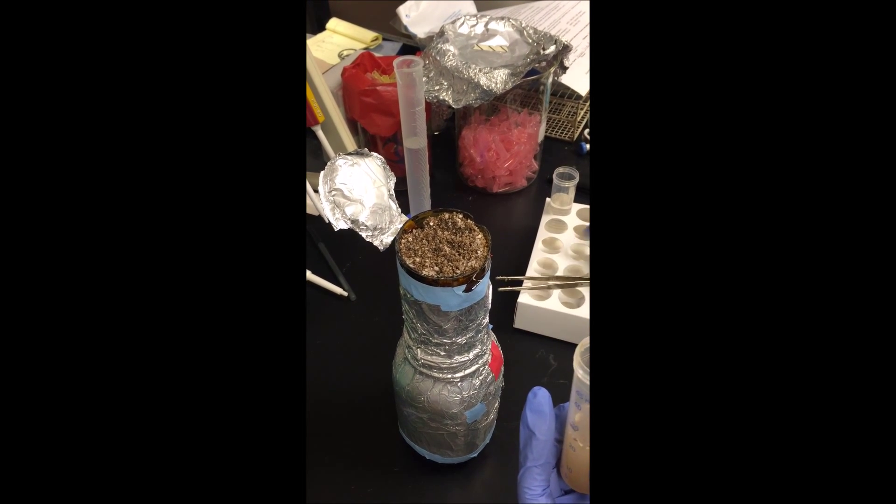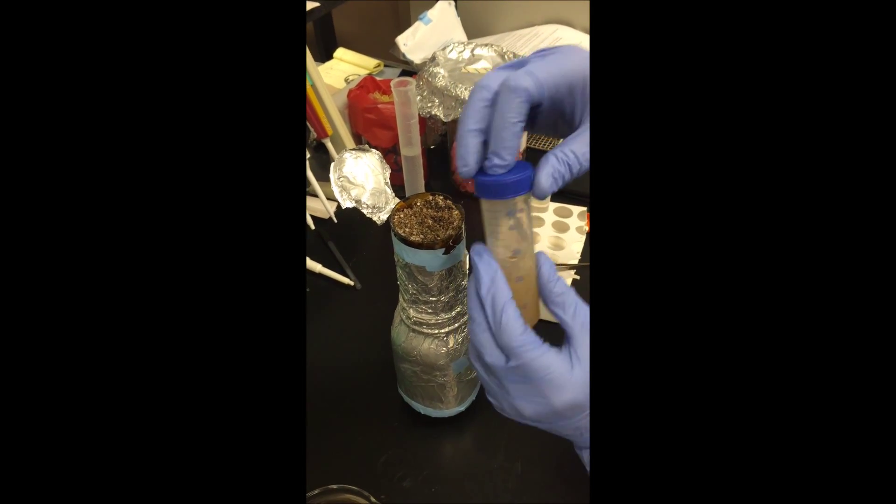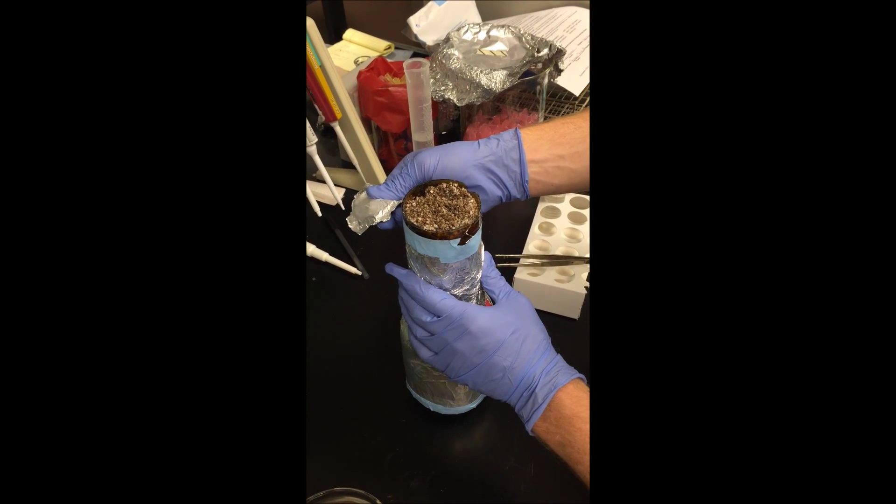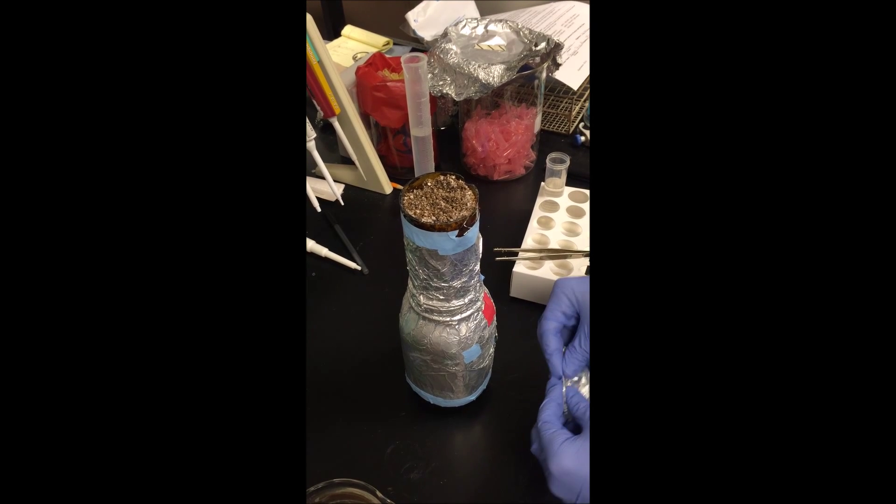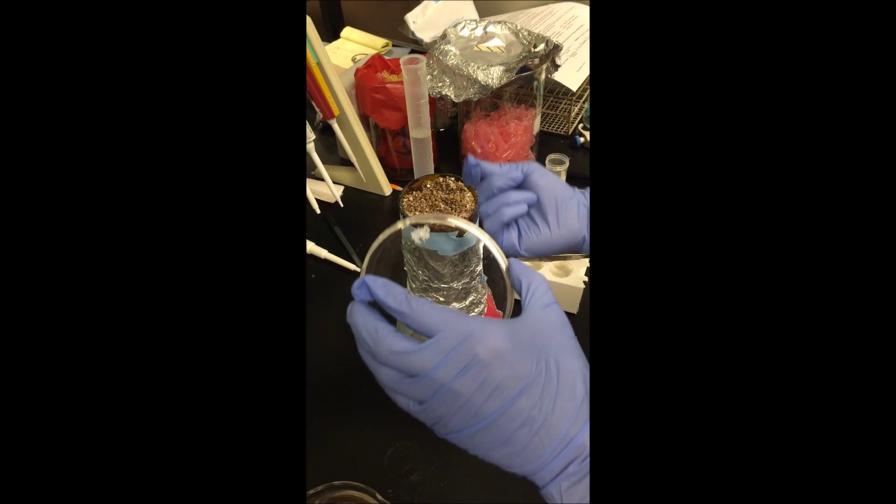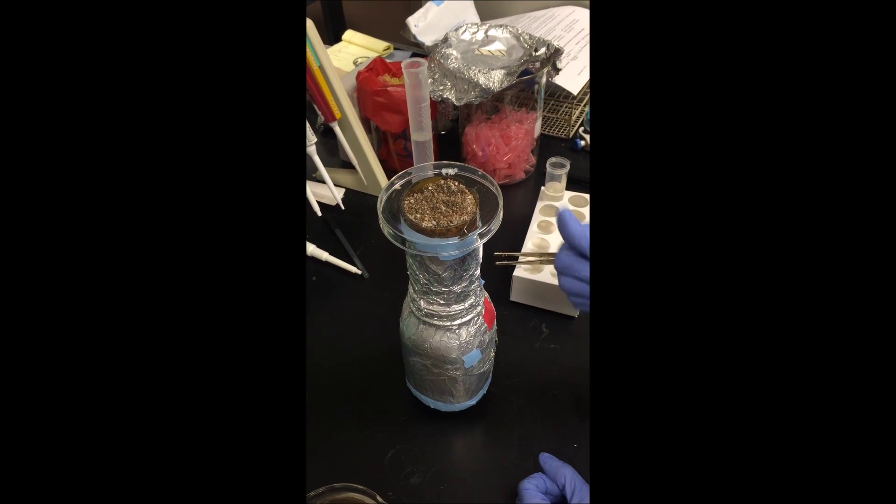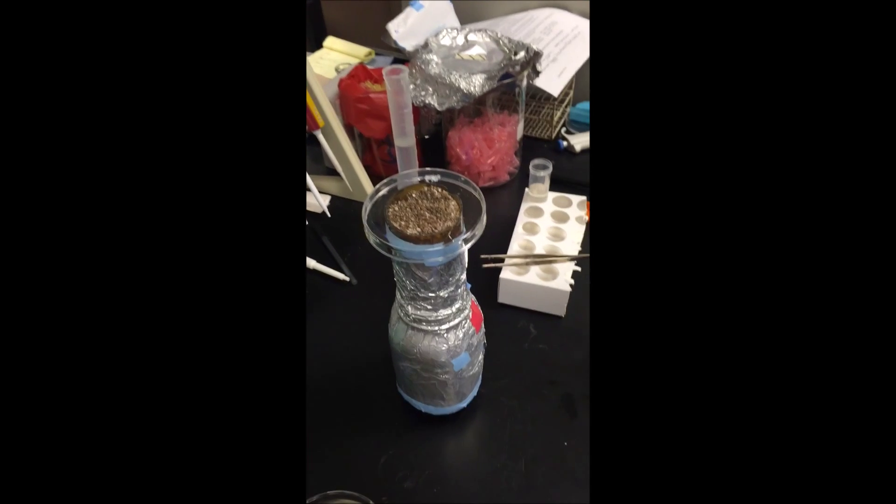Put your tweezers to the side. You can discard your excess seeds. You don't need them anymore. And next, what you're going to do is put a clear covering on top of the liner jar because the seeds need to know which direction to grow. And so the seeds, the plant will follow the path towards the light. And that's it.